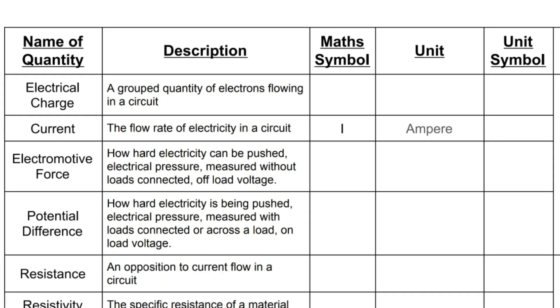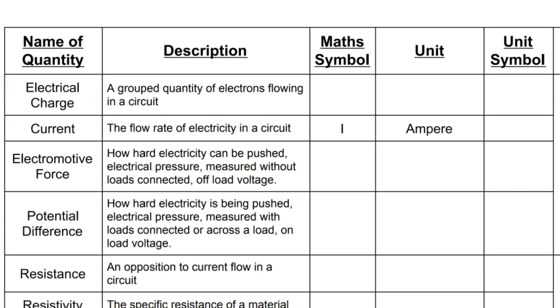Current is measured in amperes, named for André-Marie Ampère, who was one of the early innovators who started looking into electricity. That often gets shortened to amps, so you may hear it expressed as amps, but the correct name is the ampere. The unit symbol — the letter we put after the number — is a capital A. So if we had, say, 10 amps flowing through a circuit, we would write I equals 10A, and when we see that we would read it as current is equal to 10 amperes.